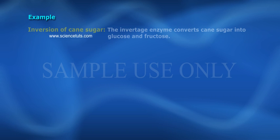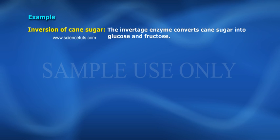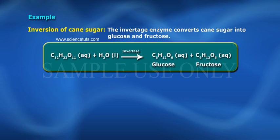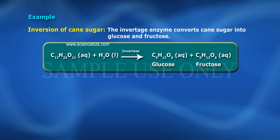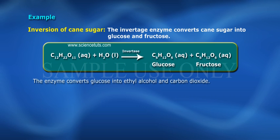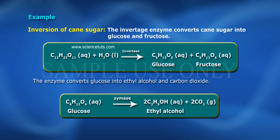Example: Inversion of cane sugar. The invertase enzyme converts cane sugar into glucose and fructose. C12H22O11 plus H2O in the presence of invertase gives C6H12O6 glucose plus C6H12O6 fructose. The enzyme zymase converts glucose into ethyl alcohol and carbon dioxide. C6H12O6 in the presence of zymase gives 2C2H5OH ethyl alcohol plus 2CO2.